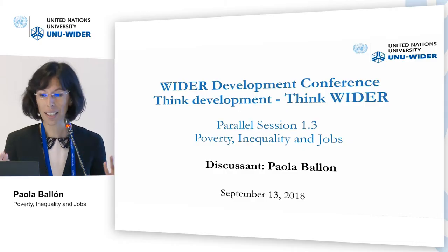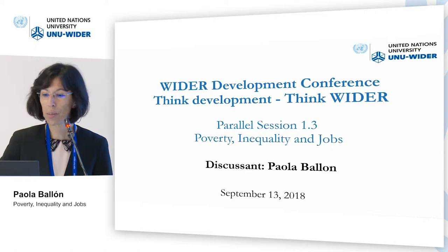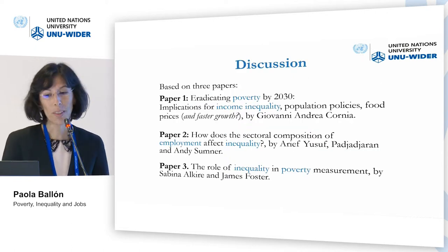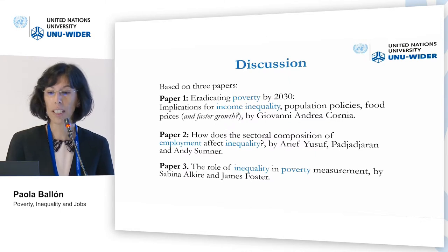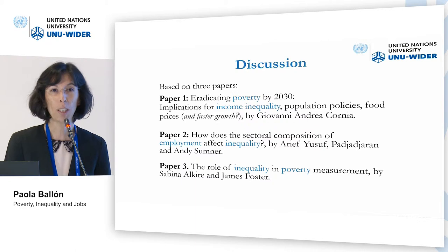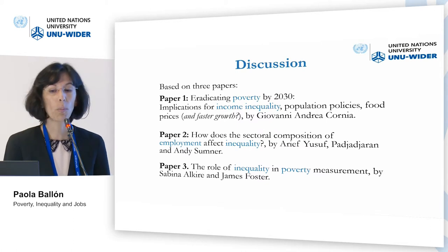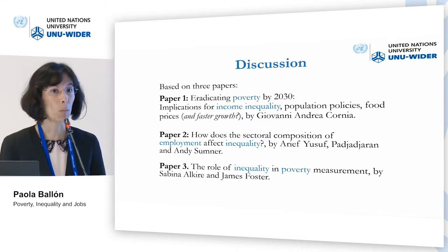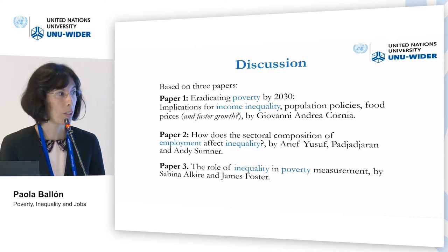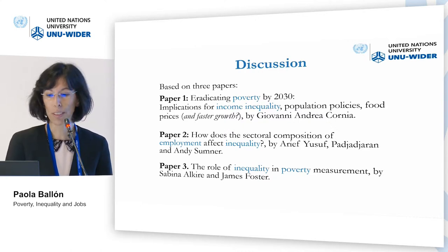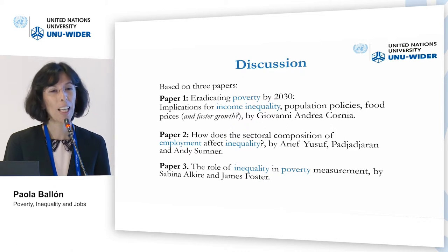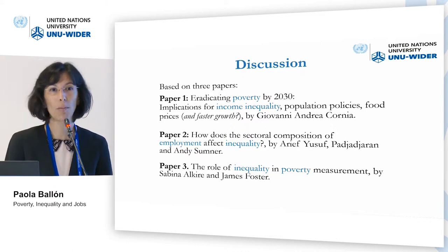The presentation is on the discussion about poverty, inequality and jobs. It is based on these three papers that we have just listened to. The first on eradicating poverty by 2030 and its implications for income inequality, discussed by Professor Andrea Kornia. The second on how the sectoral composition of employment can affect inequality, presented by Professor Yusuf and Professor Andy Sumner. And the third, the role of inequality in poverty measurement, co-authored by Professor Alkair and Professor Foster. My discussion will be based on one particular point of these three papers, which is essentially the methodology — the equation that has been used for the analysis.